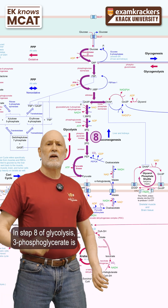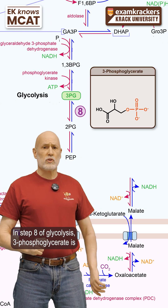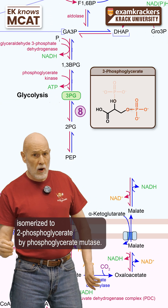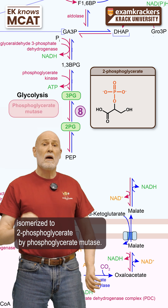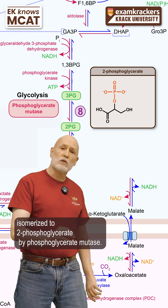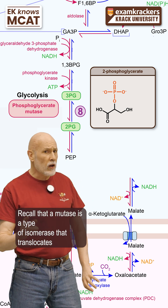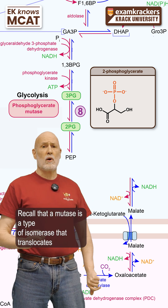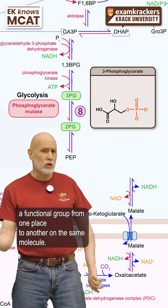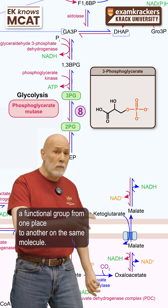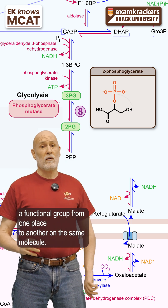In step eight of glycolysis, 3-phosphoglycerate is isomerized to 2-phosphoglycerate by phosphoglycerate mutase. Recall that a mutase is a type of isomerase that translocates a functional group from one place to another on the same molecule.